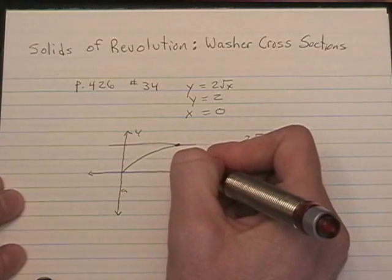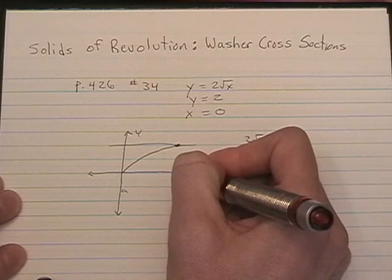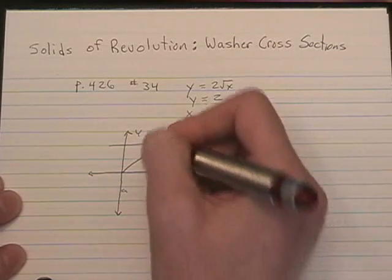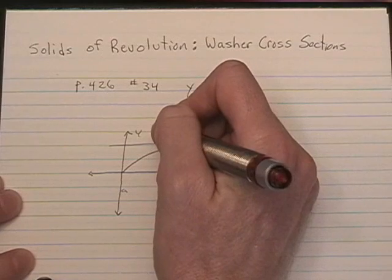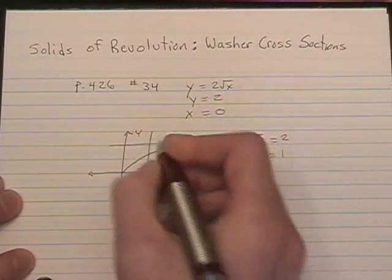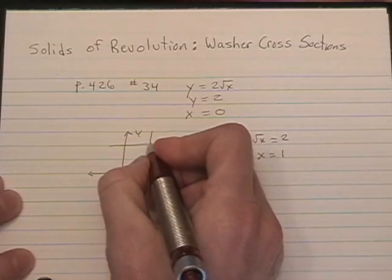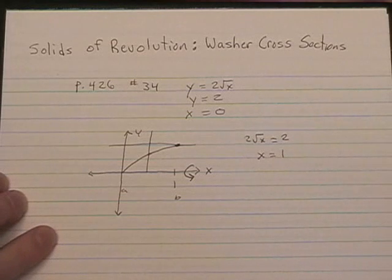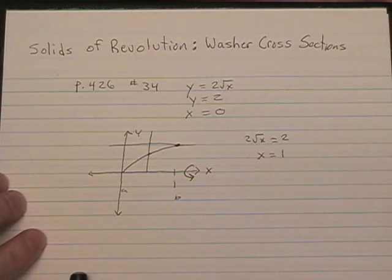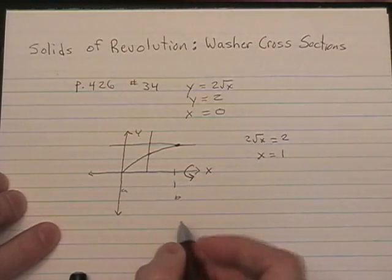Now, when you draw your picture, make sure you indicate your axis of revolution, in this case the x-axis, and you're going to draw that line segment. That helps us identify our big radius, or our outside radius, and our small radius, which is our inside radius.